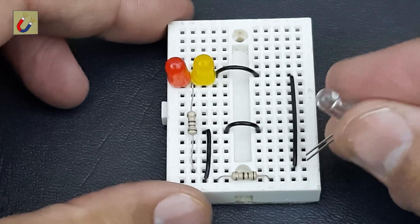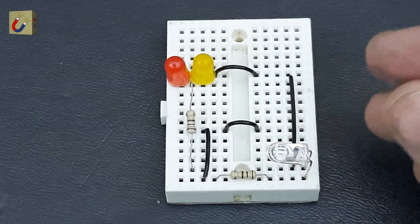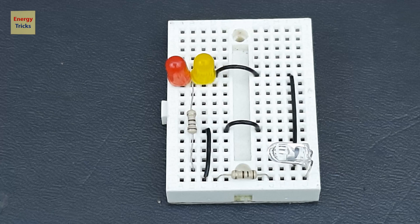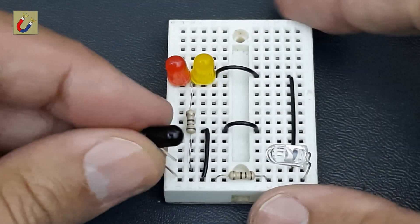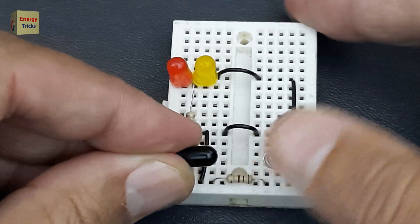Next, insert the IR transmitter and IR receiver into the breadboard. Connect the negative pin of the IR transmitter to the same resistor, ensuring a shared ground connection.